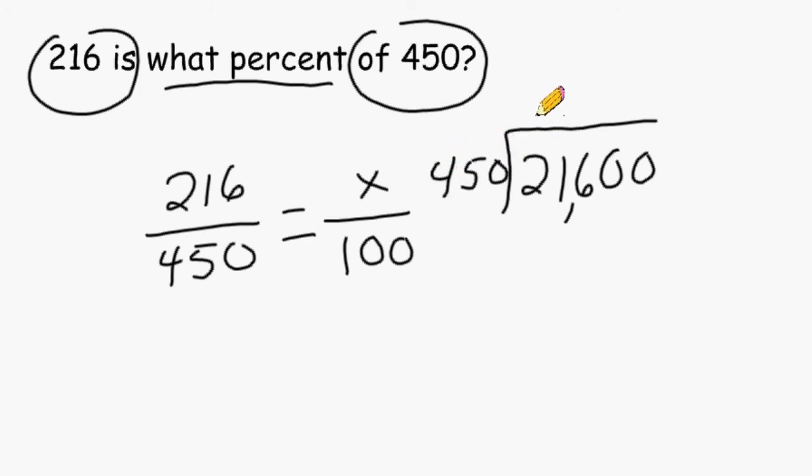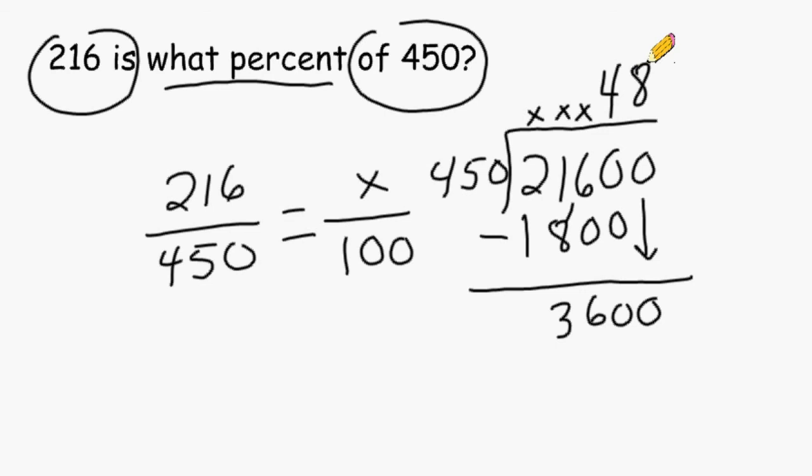We have to determine how many groups of 450 can be divided into 2,160. 450 can be divided into 2,164 times, which would give us a product of 1,800. Next we subtract 1,800 from 2,160, and that would give us a difference of 360. And we have to drop the zero from our next place value and then divide 450 into 3,600. And that can be divided into 3,600 a total of 8 times. 8 times 450 is exactly 3,600, leaving us with nothing remaining.